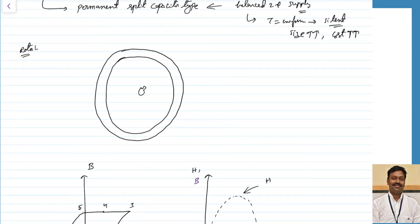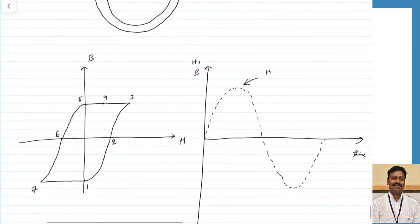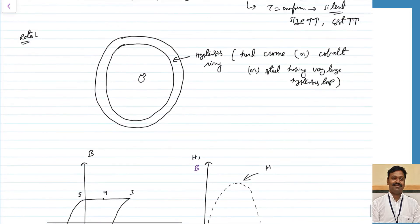Now coming to the rotor. The rotor is made up of a hysteresis material — it is made up of a hysteresis ring. This ring is made up of hard chrome or cobalt, or it can even be made up of a steel material having a very large hysteresis loop. The hysteresis loop should be as wide as possible — that is the basic requirement. It is made up of small thickness, and if possible it should be made up of laminated rings.